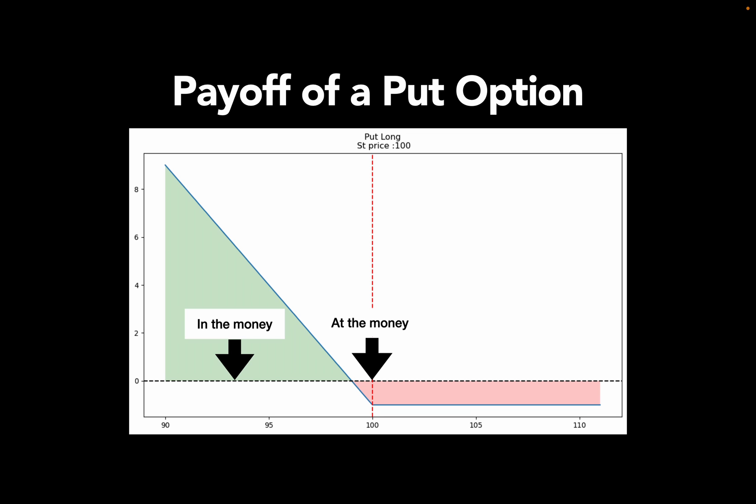Now you break even when the underlying price is low enough to compensate the option premium. In this example, the option premium is one US dollar, then you break even at an underlying price of 99 US dollar.